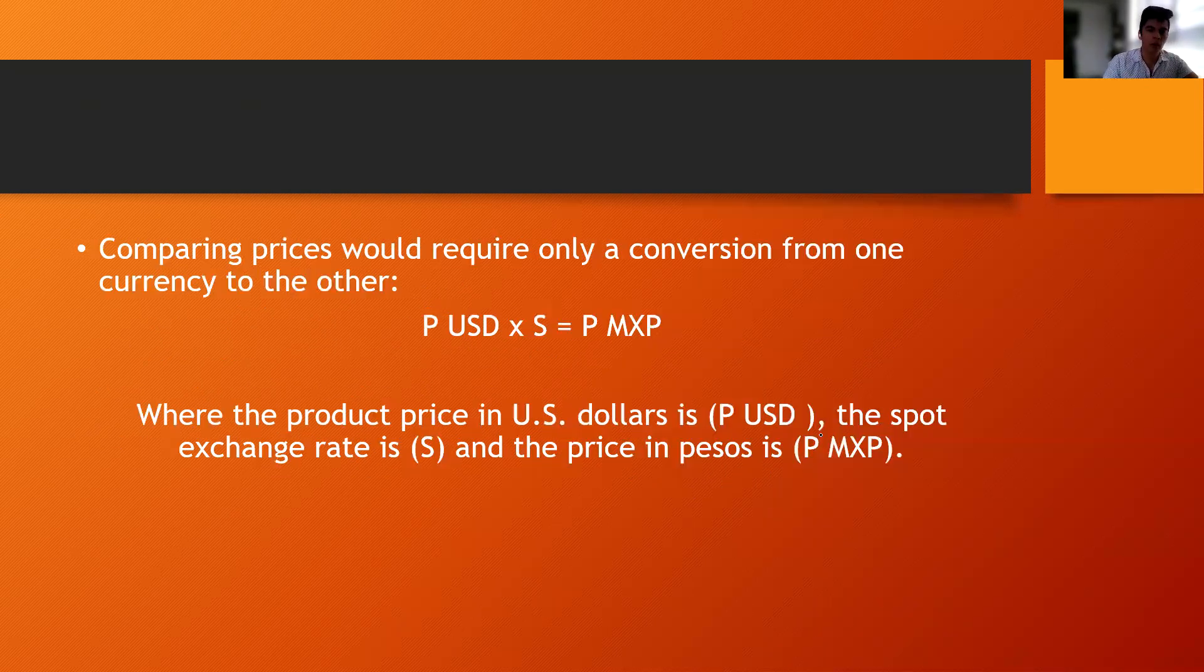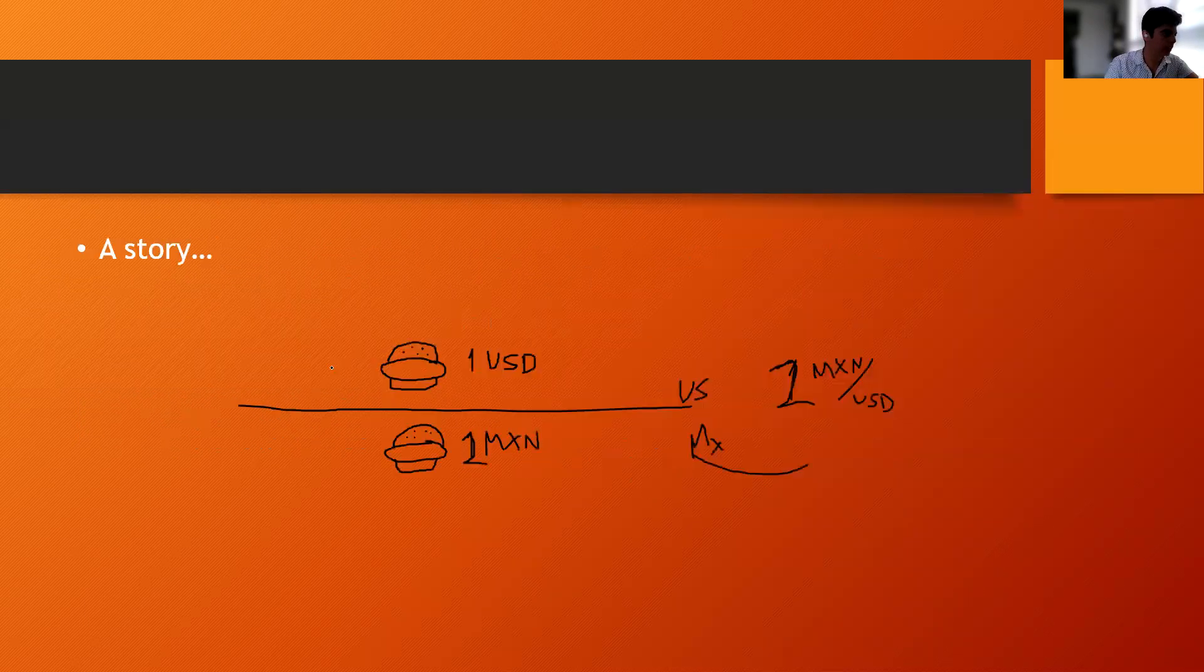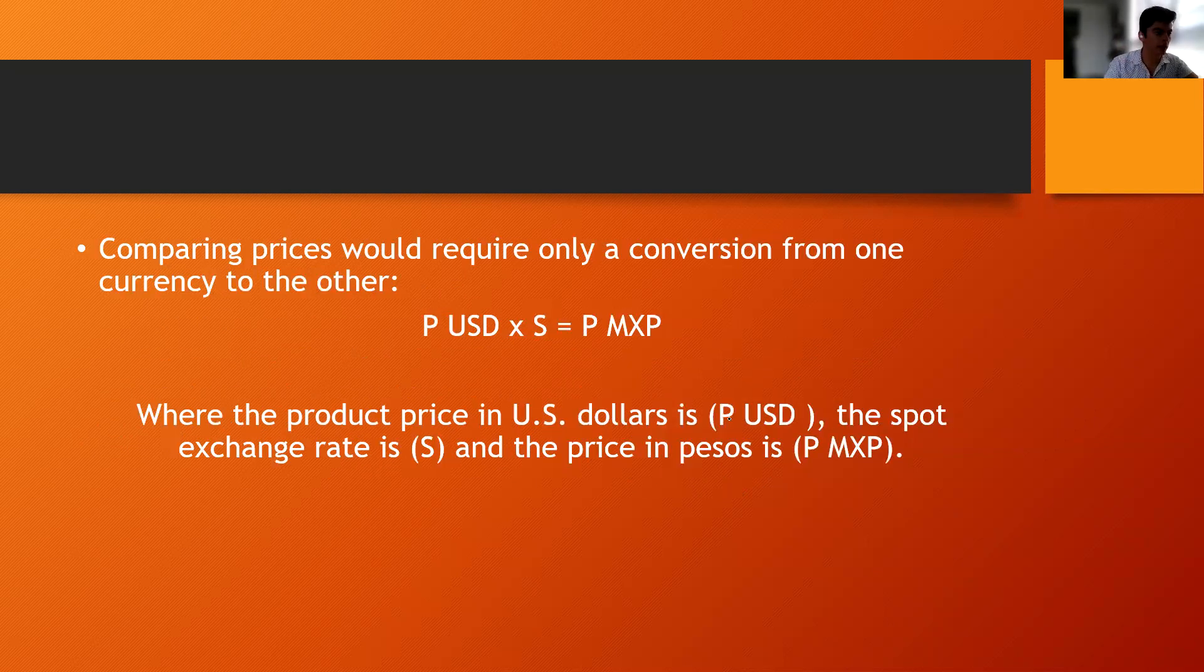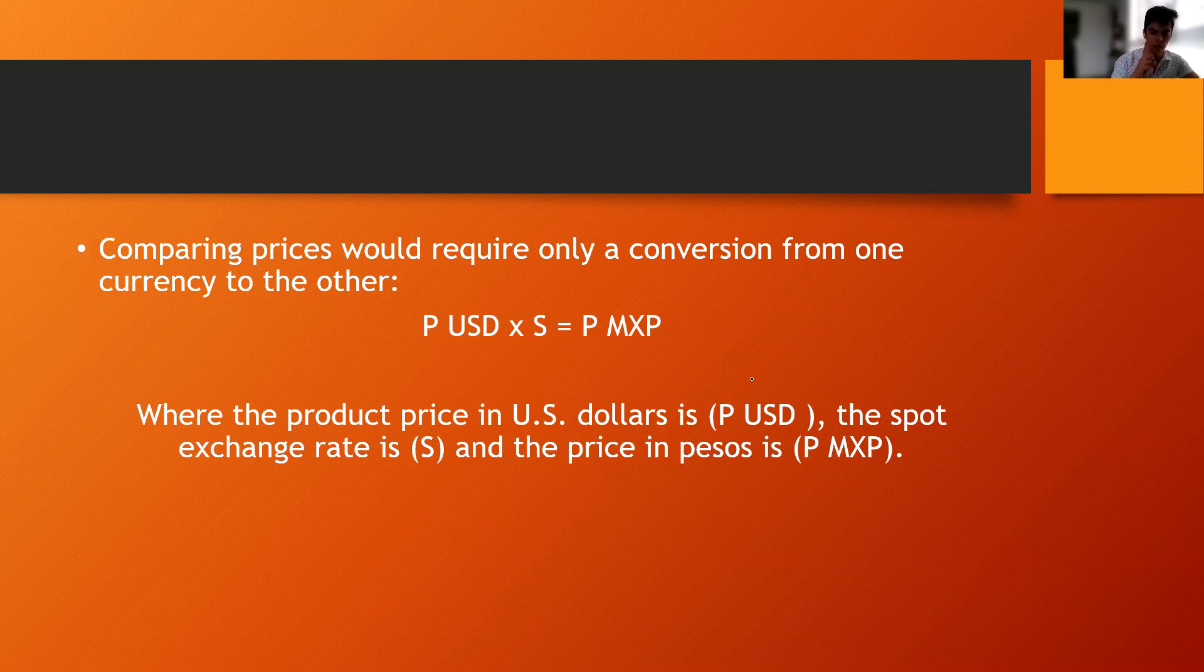So let's start with absolute PPP. Absolute PPP is similar to my story because in my story I assumed that the only good that you could buy yourself is this burger. In the absolute PPP, you focus only on one good. That's why it's called absolute, because you focus only on one good, and with that good you intend to forecast what will happen with the exchange rate.